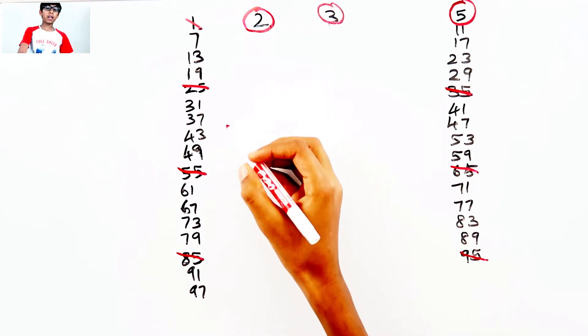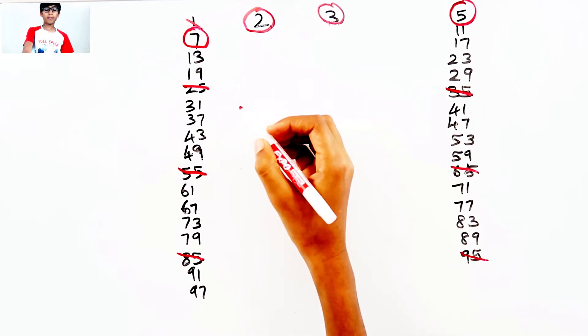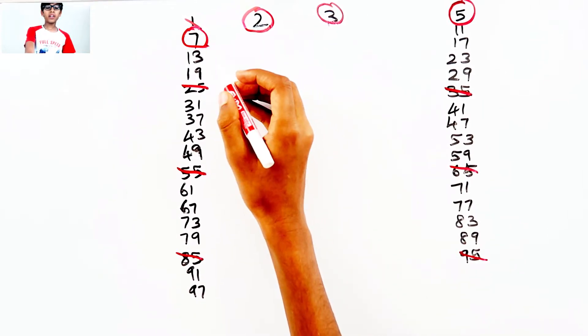The next prime number is 7. I'll just circle it. Here's the easy way.